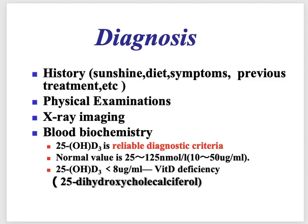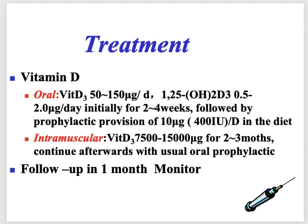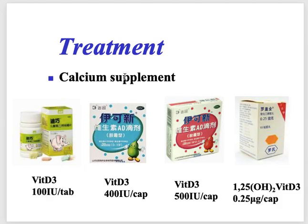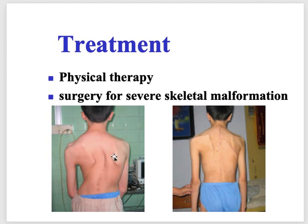Management of nutritional rickets is by correcting the diet, giving balanced diet, and administering vitamin D3 or cholecalciferol. It takes around two to four weeks for healing to occur and for alkaline phosphatase levels to fall. Healing can also be seen on X-rays. Complete recovery from bony disorders takes years. Vitamin D can be given intramuscularly or orally. Calcium supplements are also available as tablets and capsules. Physical therapy or surgery may be needed for skeletal malformations.